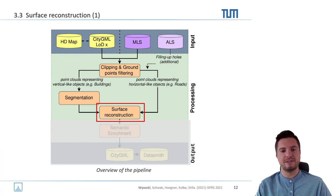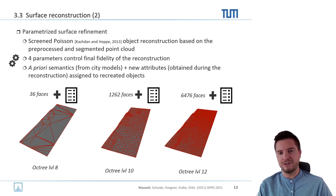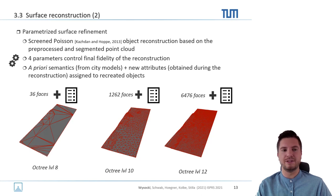All of this feeds into the surface reconstruction step. From both vertical-like and horizontal-like objects we go directly to surface reconstruction, which is actually a surface refinement — the aim is to preserve the existing semantics and geometry while adding new geometry and new attributes. This is controlled by four parameters within the Screened Poisson algorithm. As you can see below, depending on the parameter used, the geometry resolution increases while semantics is preserved and also added.